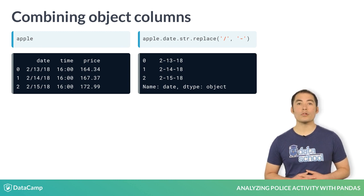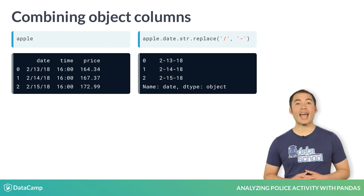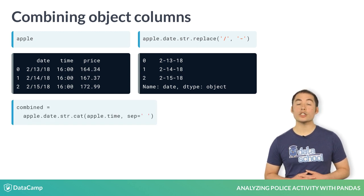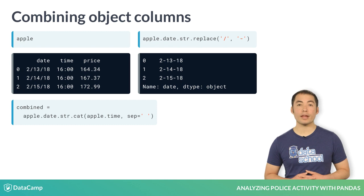In this example, we're replacing the forward slash in the date column with a dash. It outputs a new series in which the string replacement has been made, though this change is temporary since we haven't saved the new series. To combine the columns, we're going to use the str.cat method, which is short for concatenate. We'll concatenate the date column with the time column, and tell pandas to separate them with a space, storing the result in a series object named combined.